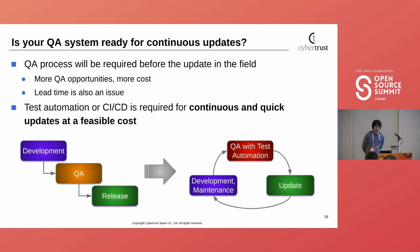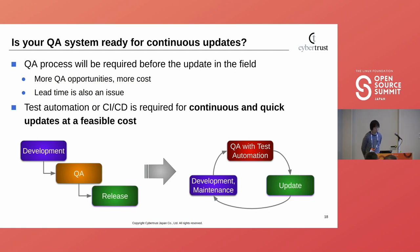The next point to be checked is: is your QA system ready for continuous updates? A QA process will be required before the update in the field. More QA opportunities lead to more cost, especially if it is mostly done manually, and lead time is also an issue. Test automation or CI/CD is required for continuous and quick updates at a feasible cost.